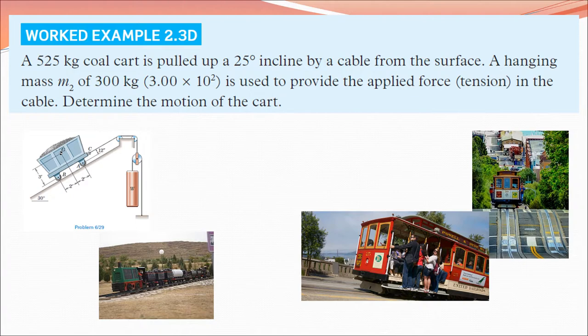There are pictures of minecarts where a hanging mass is set up to pull the minecart up the hill — an alternative to using an engine. On the right are cable cars in San Francisco. When San Francisco was developing, the hills were too steep for horses to pull carriages up for the wealthier inhabitants, so they installed a cable car system. They're called cable cars because under the road there is a cable that the tram clamps onto, creating the tension to pull the cable car up the hill.